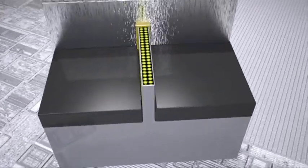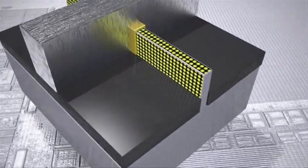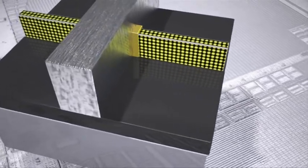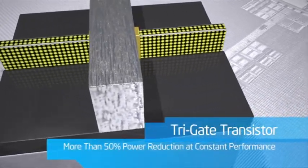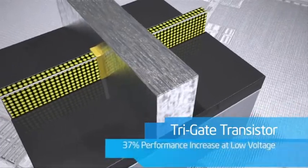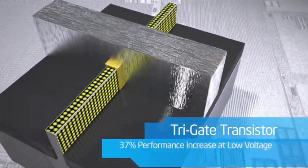The control is on all three sides of each fin, rather than just one, as in the planar transistor. We call this a tri-gate transistor, and its real advantage over planar is the ability to operate at lower voltage with lower leakage.